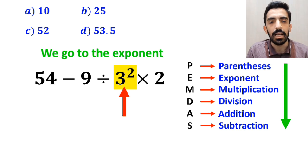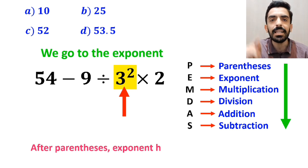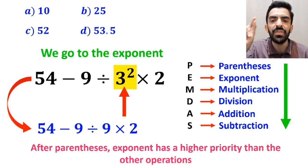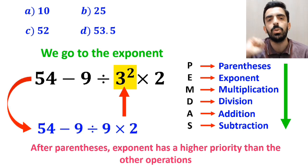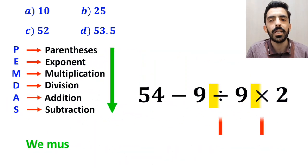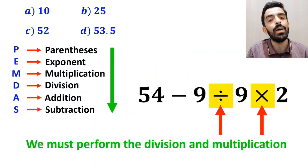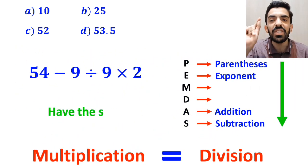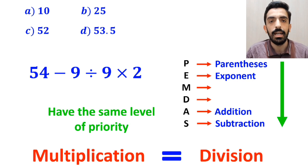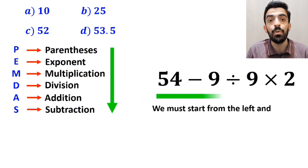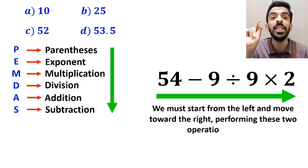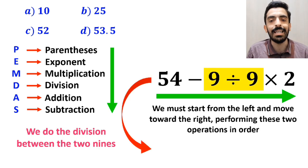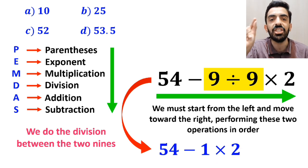And the next step, we go to the exponent, because after parentheses, exponent has a higher priority than the other operations. So this expression simplifies to 54 minus 9 divided by 9 times 2. Then we must perform the division and multiplication. It's really important to understand that in the PEMDAS rule, multiplication and division have the same level of priority. In this situation, we must start from the left and move toward the right, performing these two operations in order. So first we do the division between the two 9s, and this expression simplifies to 54 minus 1, then times 2.